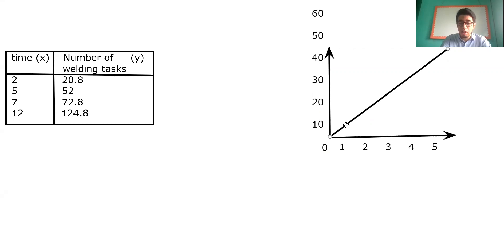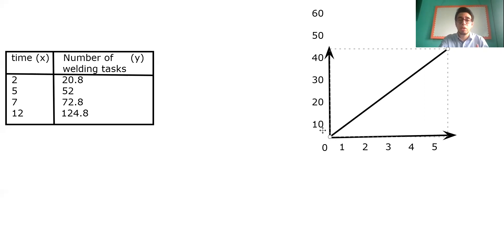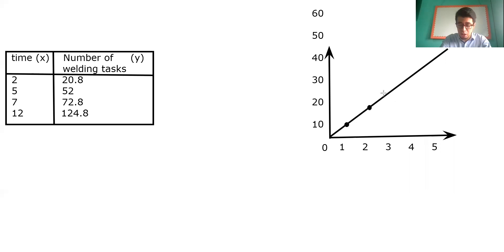We are going to place the points. For the first one, X equals 1 and the Y value is 11.2 — it's not exactly 10, it's 11.2 on the vertical line, as you can see on the small grid in your book. Then for X=1 at 11.2, X=2 at about 20, X=3 at 30, and X=4 at 40. I'm moving the numbers to show the points more clearly.